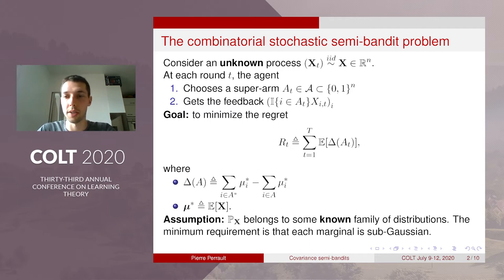And the goal is to minimize the regret which is defined as the cumulative sum of the expected gap between an optimal policy playing always the optimal action A star and the policy AT that chooses AT.